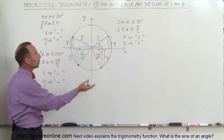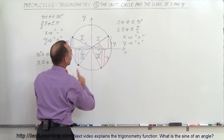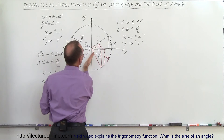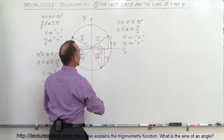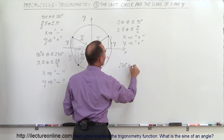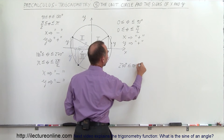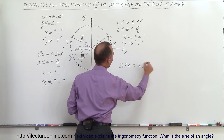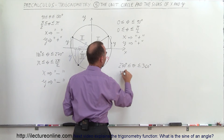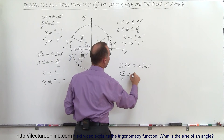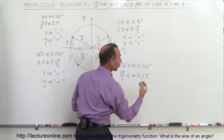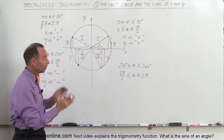Continuing on into the fourth quadrant, we've now traveled an angle between 270 and 360 degrees. So 270 degrees is less than or equal to theta, less than or equal to 360 degrees, or 3 halves pi is less than or equal to theta, less than or equal to 2 pi — remember 2 pi or 360 degrees is a full circle.